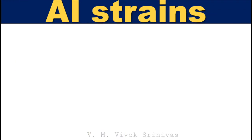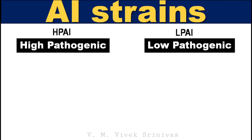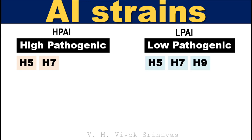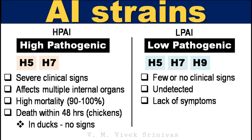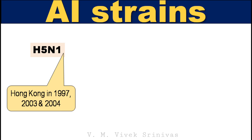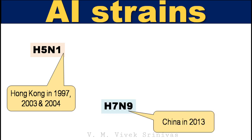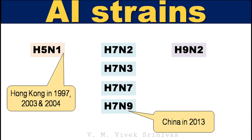Avian influenza strains can be broadly classified into highly pathogenic and low pathogenic avian influenza strains. Highly pathogenic strains may possess H5 or H7. Low pathogenic avian influenza strains may be H5, H7, or H9. Highly pathogenic strains cause severe clinical signs; H7N1 affects multiple internal organs, with high mortality reaching up to 90–100% and death seen within 48 hours, though ducks and aquatic wild birds do not exhibit signs. Low pathogenic strains cause few or no clinical signs, which may go mostly undetected. Important recorded strains include H5N1 in the Hong Kong outbreak of 1997, 2003, and 2004; H7N9 in China in 2013; and H7N2, H7N3, H7N7, and H9N2 have also been recorded.